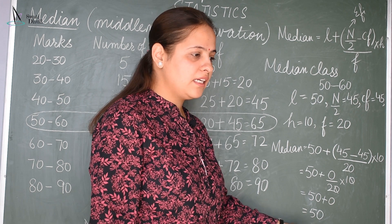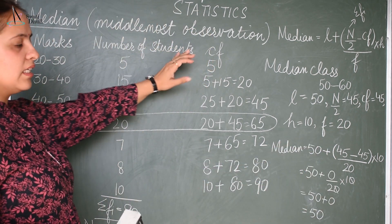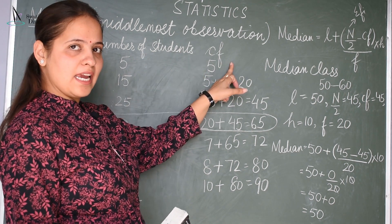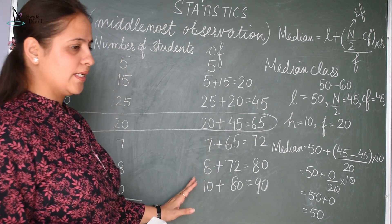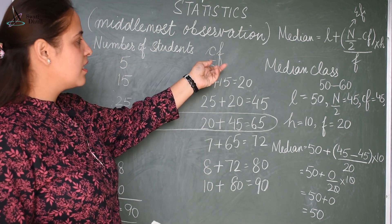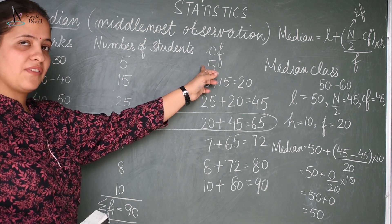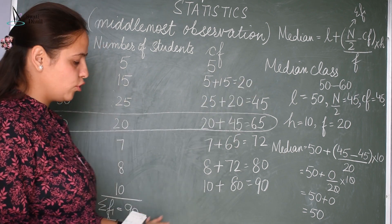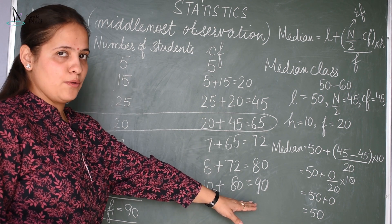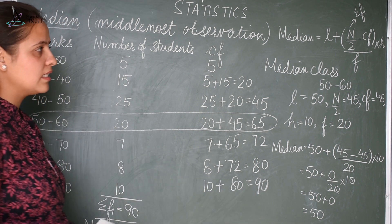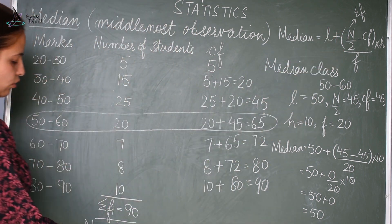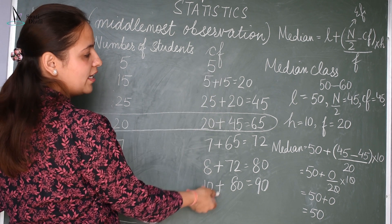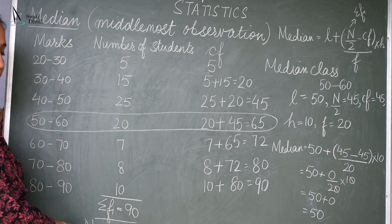So this is how we find out the median. First, find the cumulative frequency: the first frequency remains the same, then add preceding cumulative frequencies for each row — 5, then 5+15=20, then 20+25=45, and so on. Check that the last cumulative frequency equals the sum of all frequencies. Then find N/2, which is 45, and look in the CF column for the first value greater than 45.